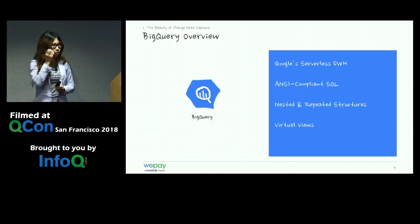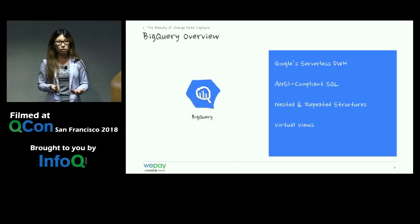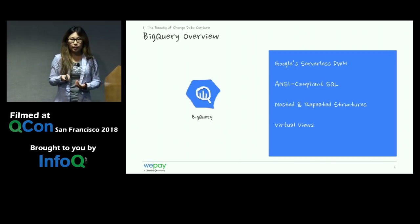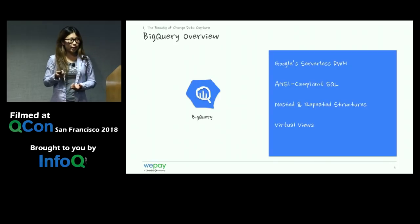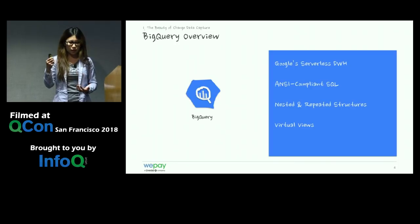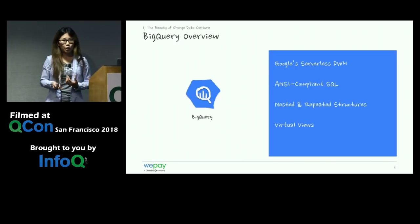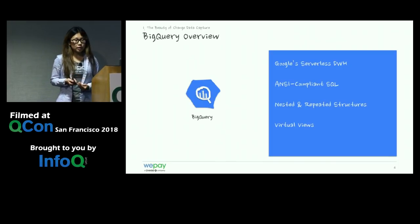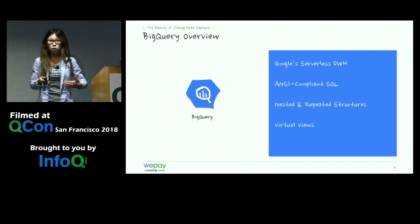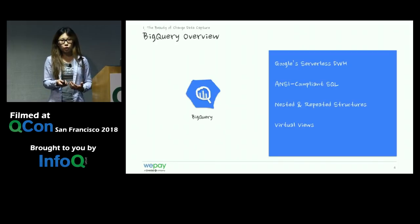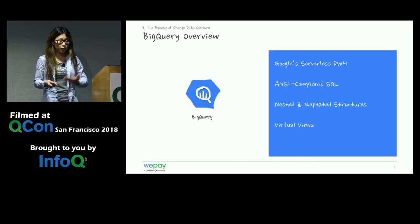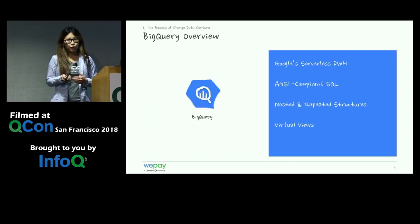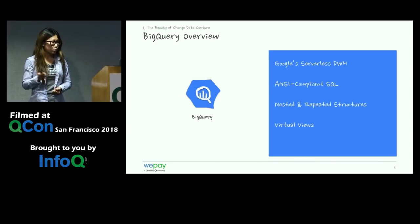At WePay, we use BigQuery. For those in the AWS world, this is the equivalent of Redshift — it's Google's cloud data warehouse. It uses ANSI-compliant SQL as its query language, making it easy for developers to pick up. It supports nested and repeated data structures like lists, structs, and even geospatial data types, which is useful for CDC. It also has a virtual view feature — because views are not materialized, when you query a view you're querying the underlying table, allowing you to access real-time data even through views.